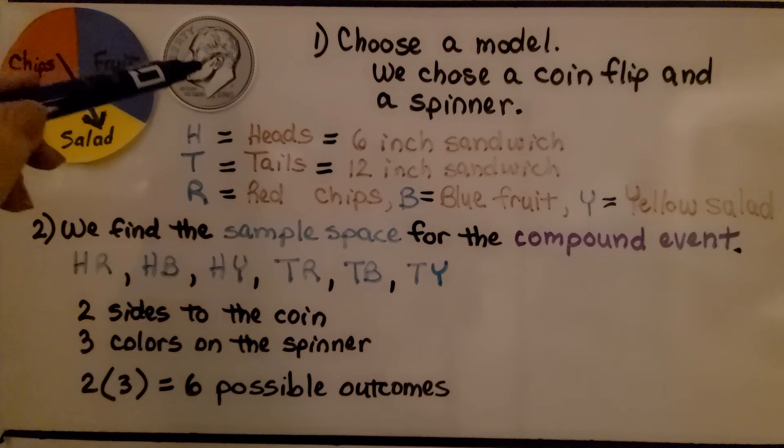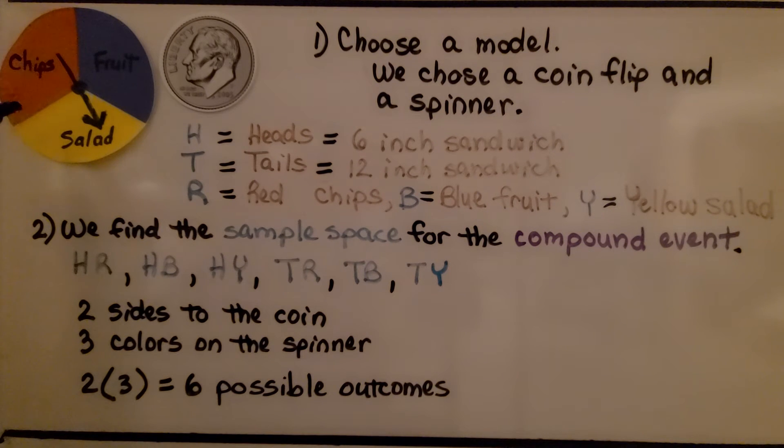The spinner is going to help us decide: R for red will be chips, B for blue will be fruit, and Y for yellow will be salad.